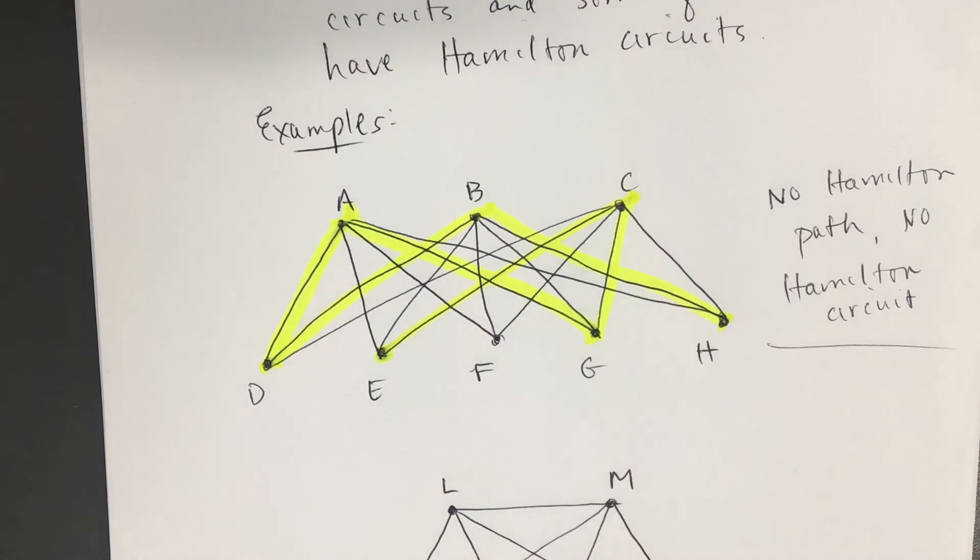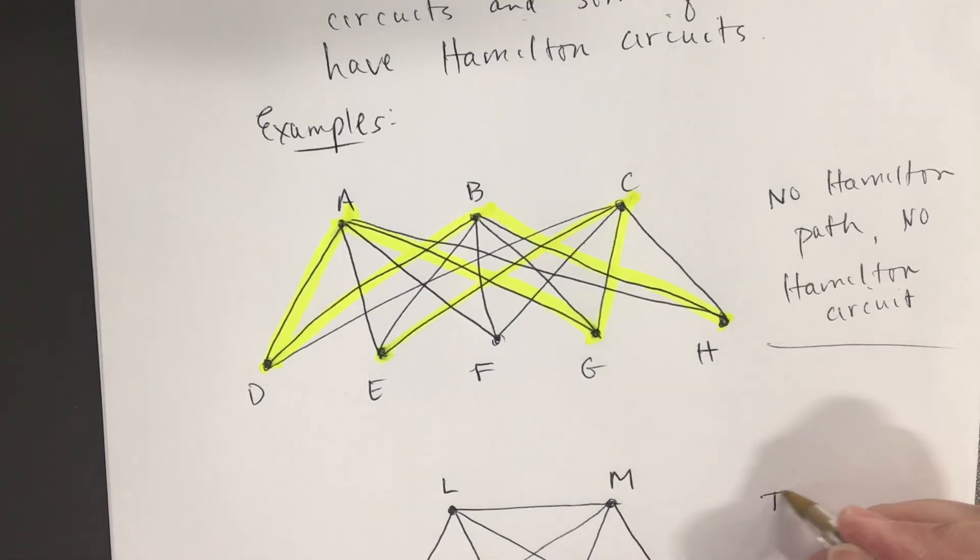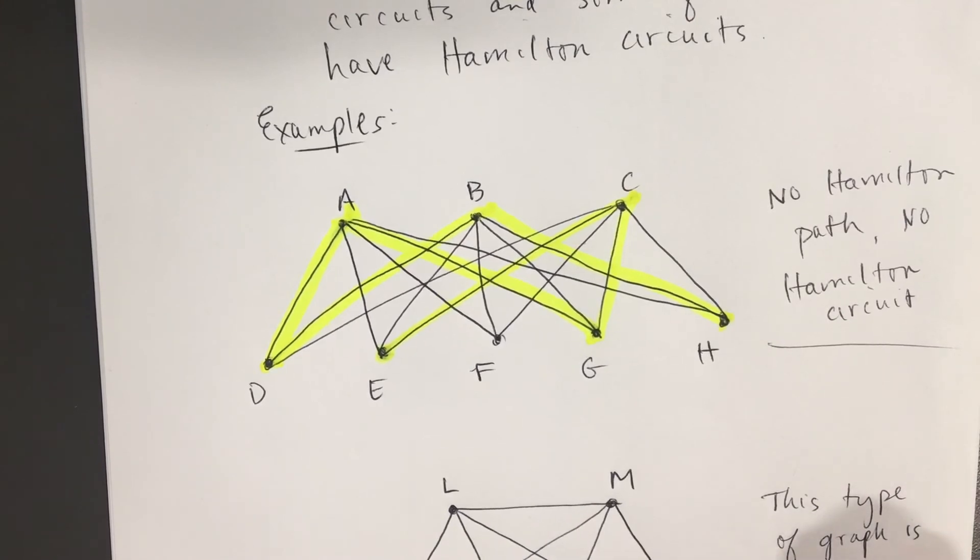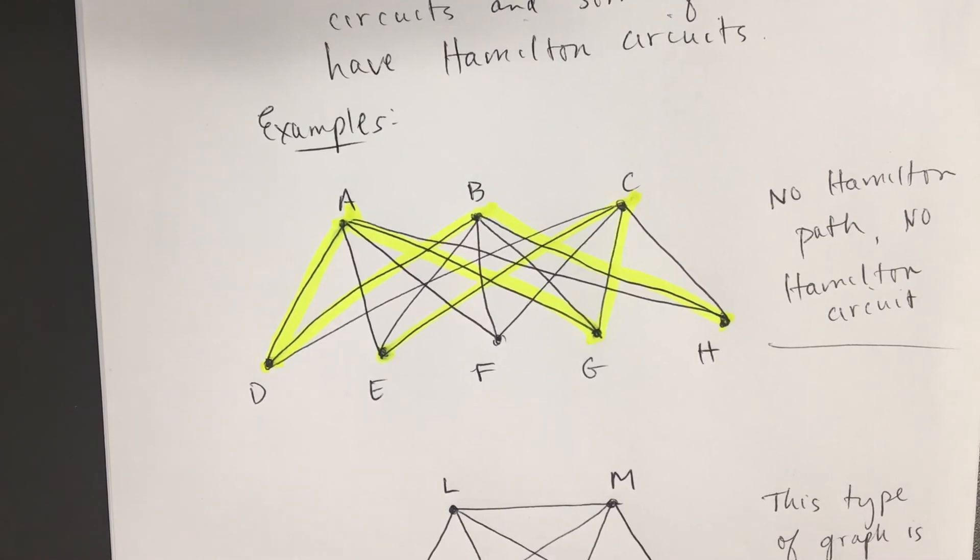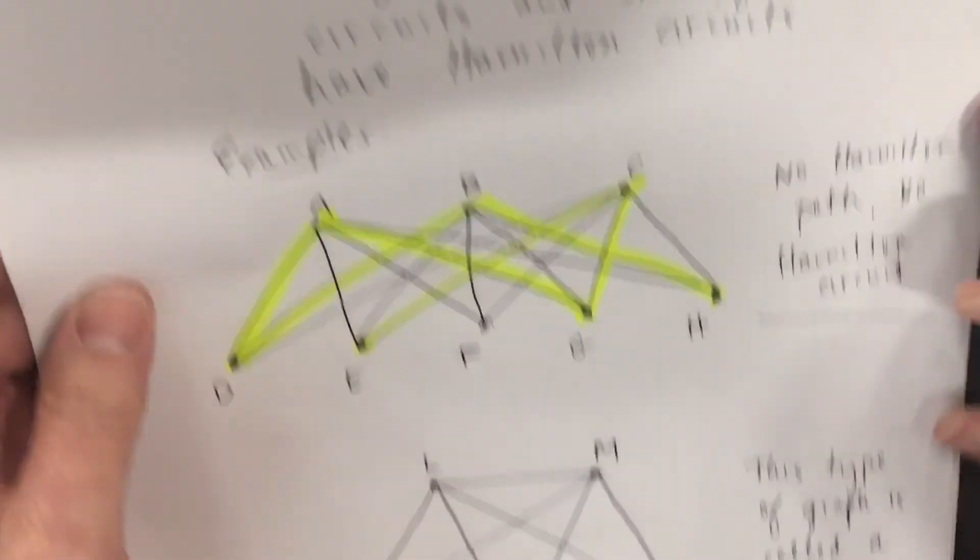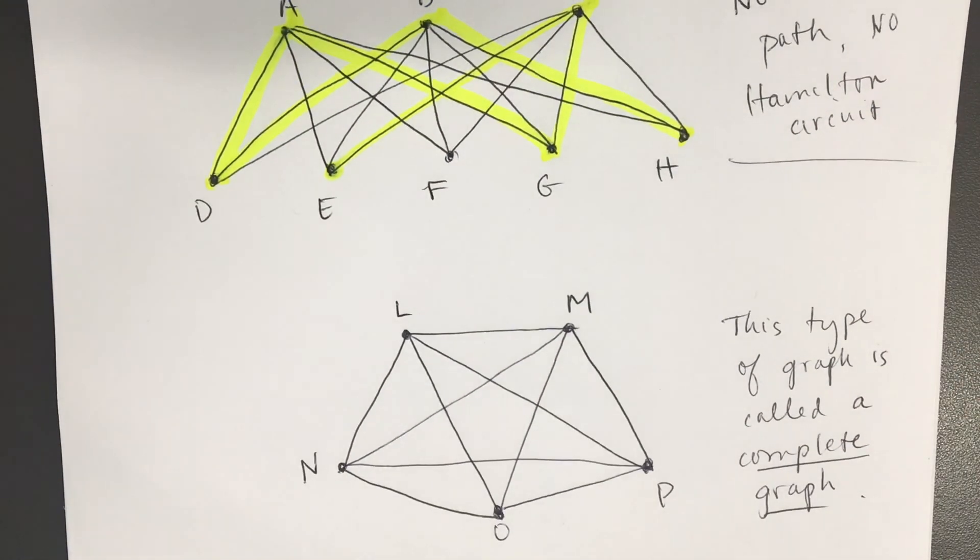This type of graph will always have Hamilton circuits. This type of graph is called a complete graph. I'll write a definition for complete graph on the next page. But this type of graph, a complete graph, always has Hamilton circuits. In fact, there's more than one on this one.